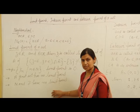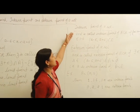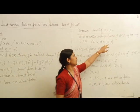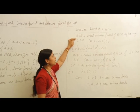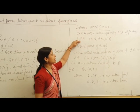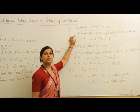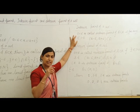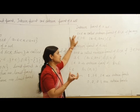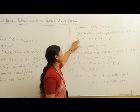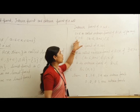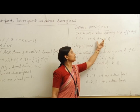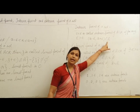Now we come to our next topic: interior point of a set. Let A be any real number and A be a subset of R. Then A is called an interior point of set A if there exists at least one neighborhood of A which is wholly contained in A. As its name shows, interior point means a point which is inside that set A. Mathematically, there exists at least one epsilon greater than 0 such that (A minus epsilon, A plus epsilon) is a subset of A.